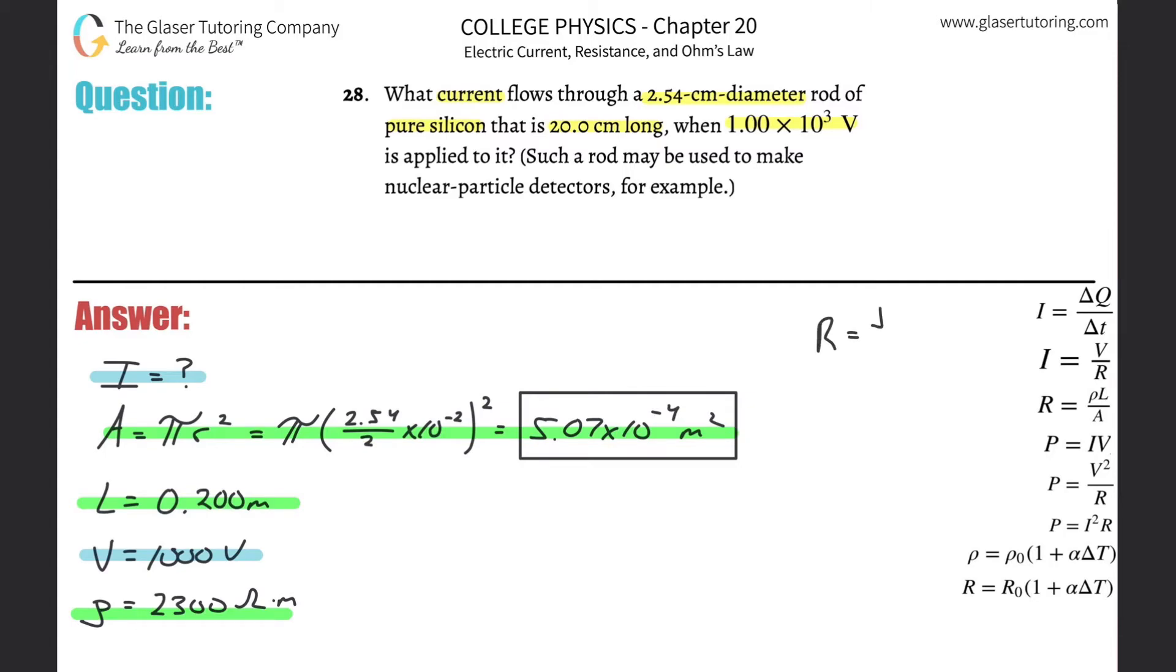The resistance is equal to the resistivity multiplied by the length all over the area. I know those are related via that formula. Okay. Look, here are the three area, length, and resistivity. Area, length, and resistivity.